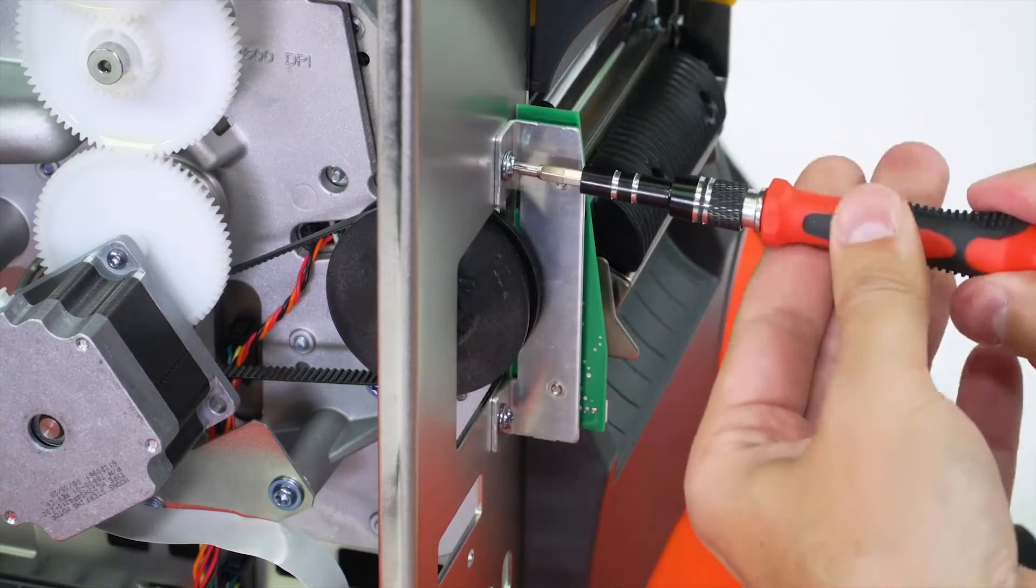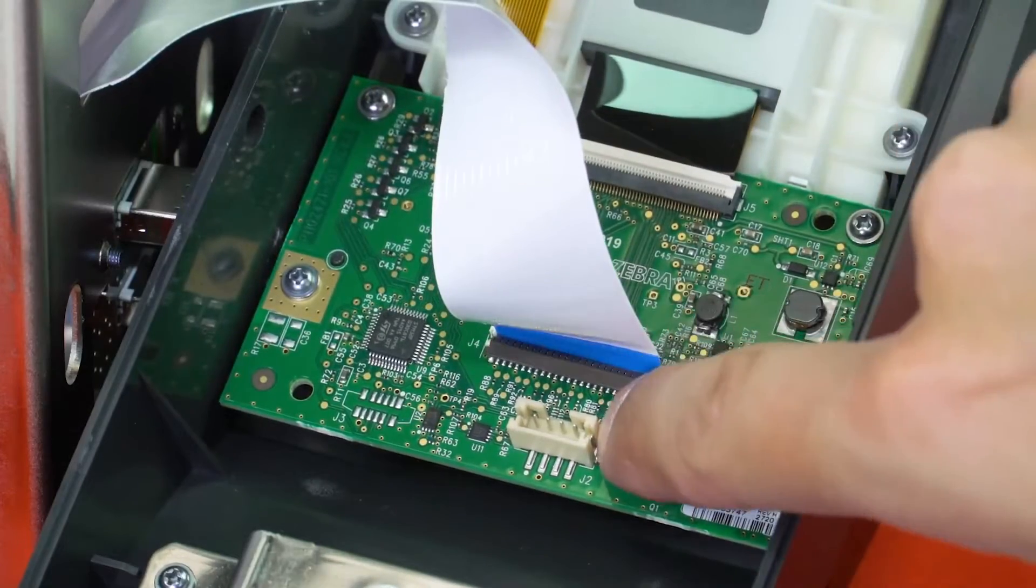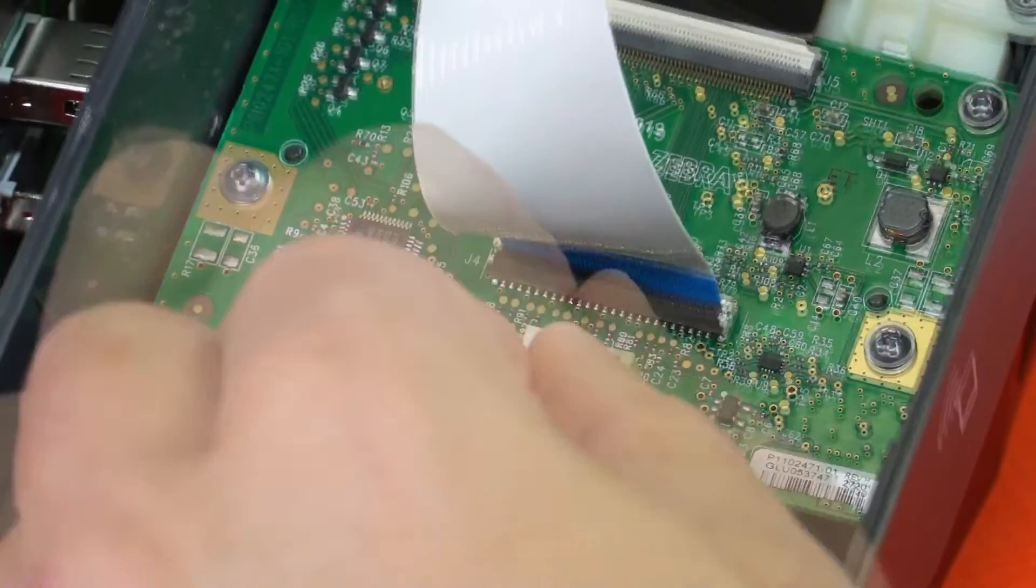Mount and fasten the take label sensor. Reconnect and lock the ribbon cable. Connect the take label sensor cable.